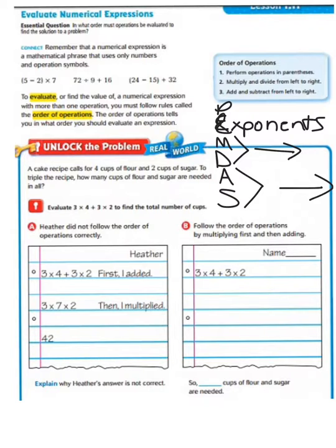P stands for parentheses, E stands for exponents, M and D stand for multiplication and division, and A and S stand for addition and subtraction.